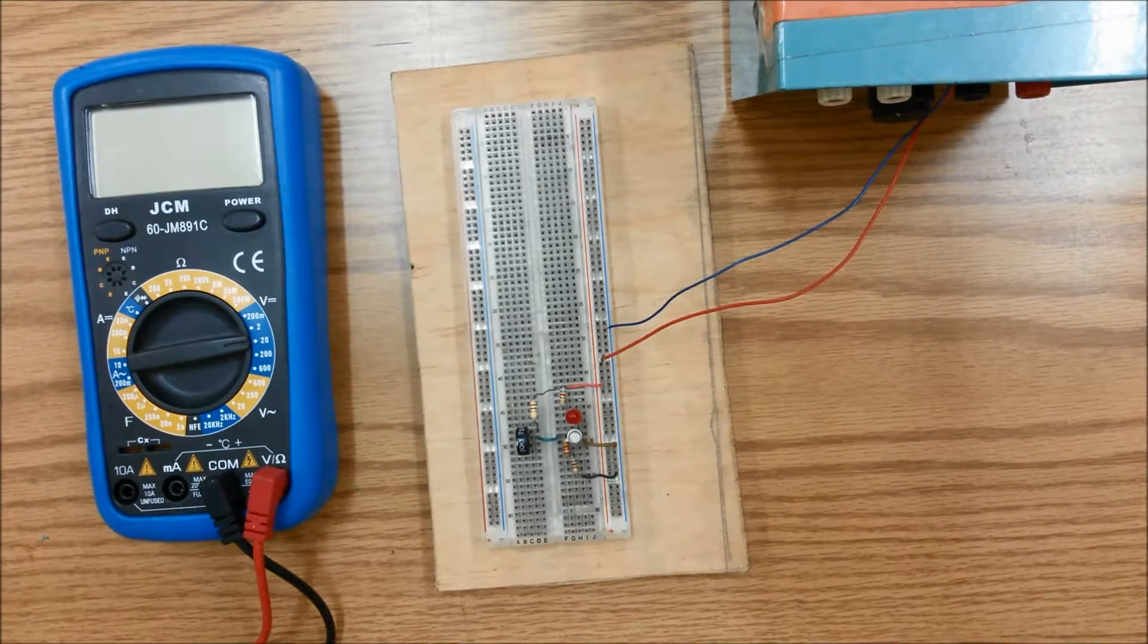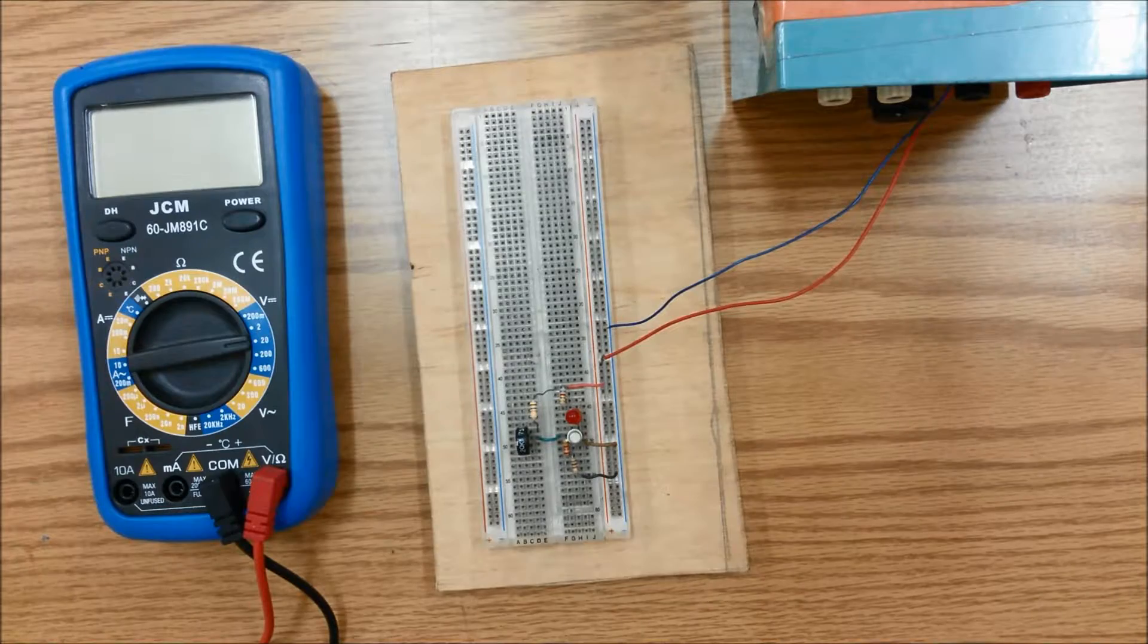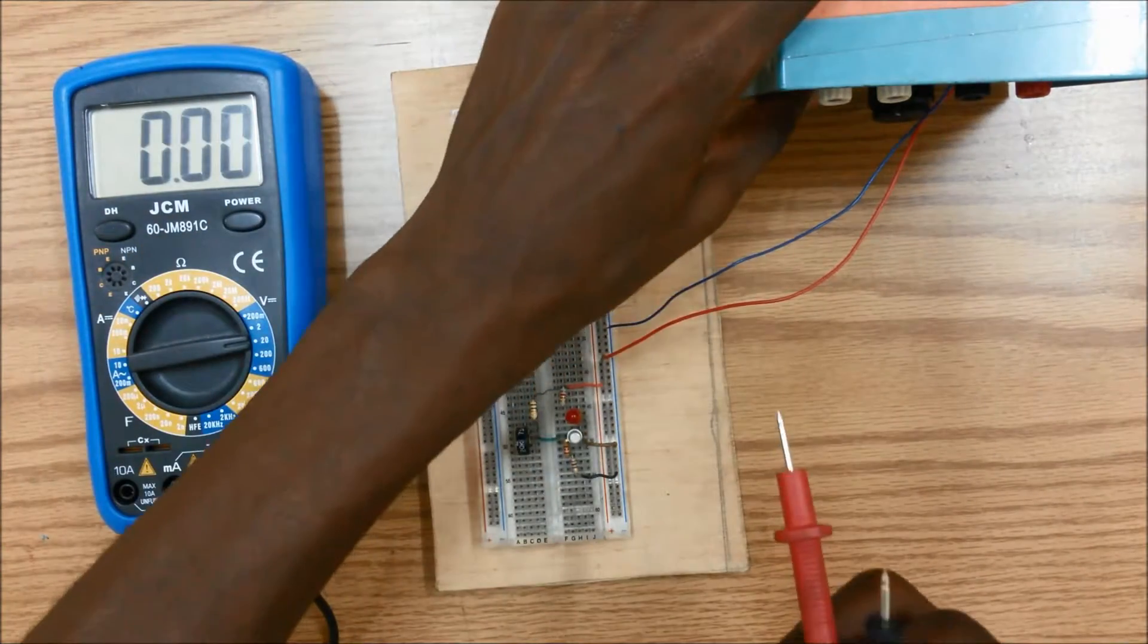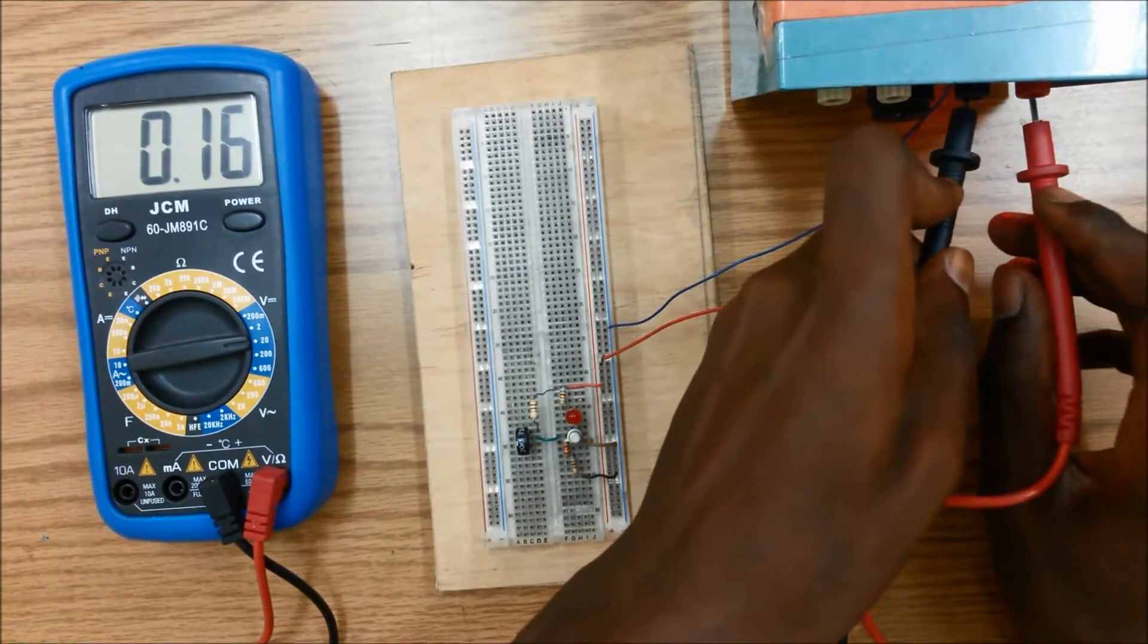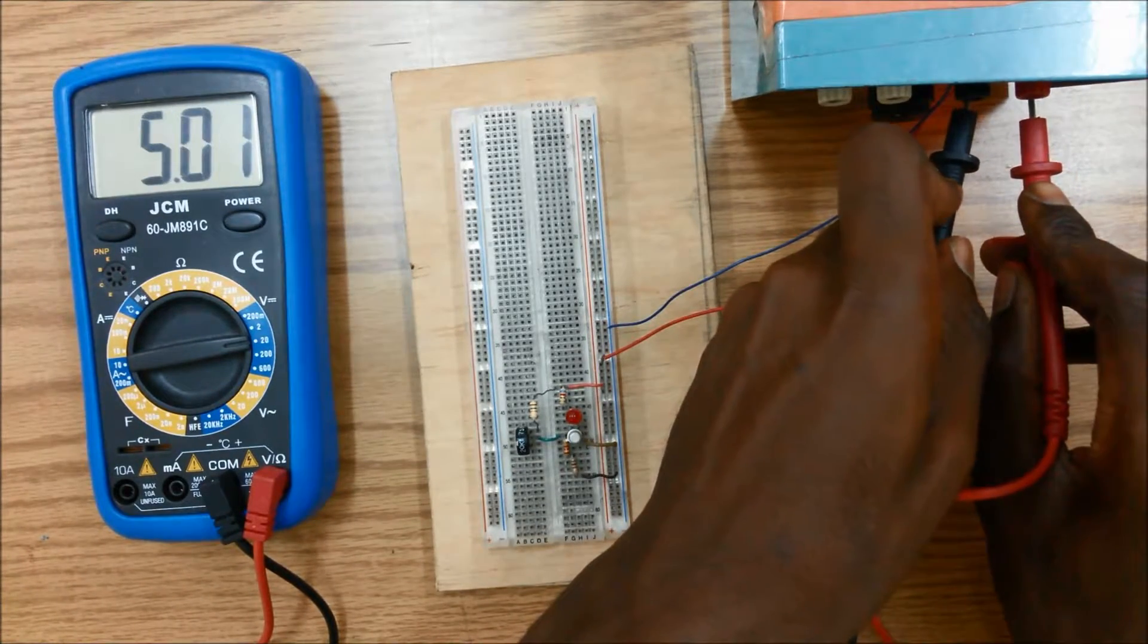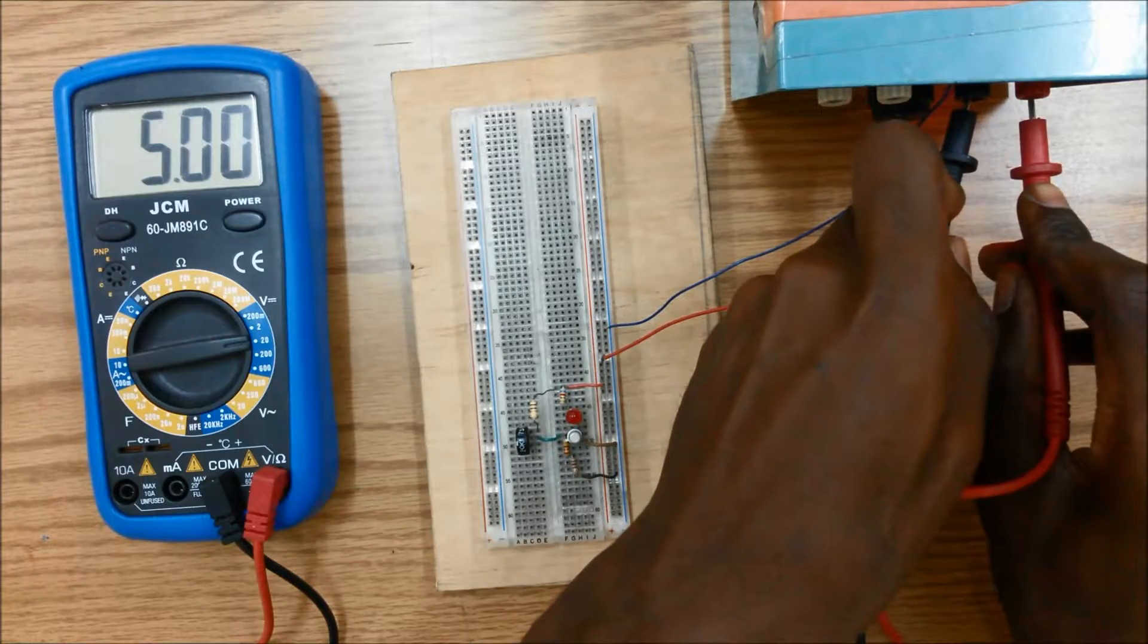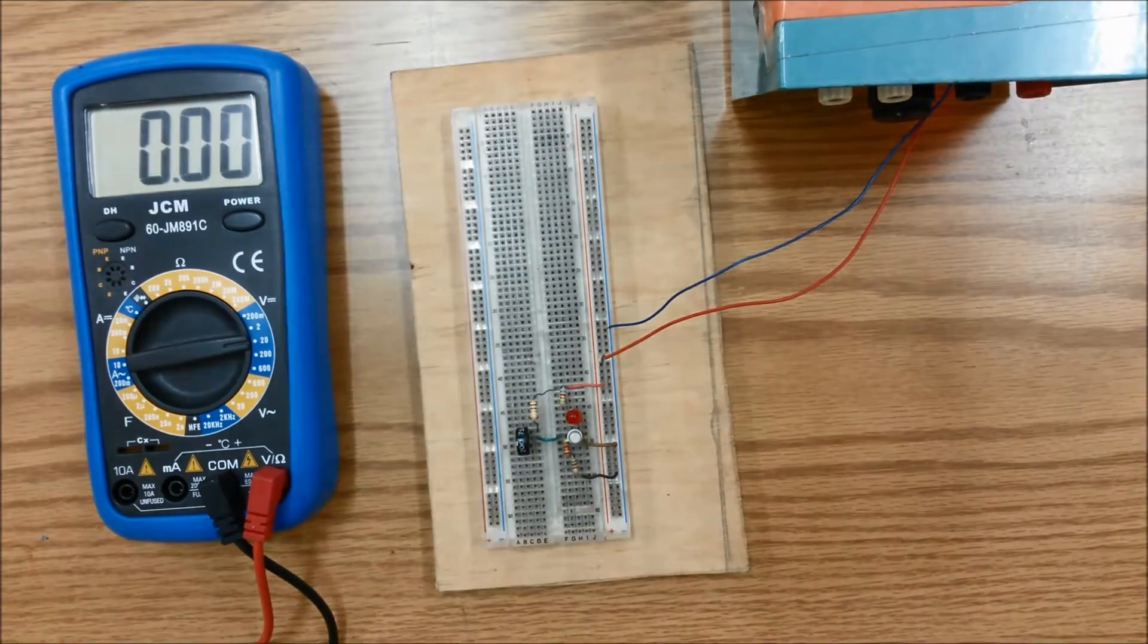So let's begin by just checking the value of the voltage coming in from the power source. Let me turn on the power supply here and check the voltage. We're getting approximately 5 volts coming from our power supply.